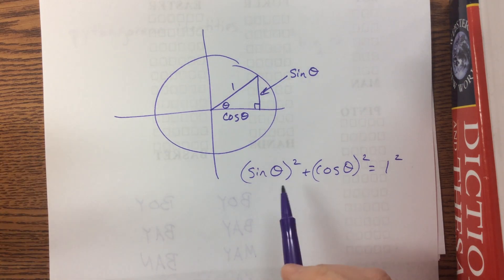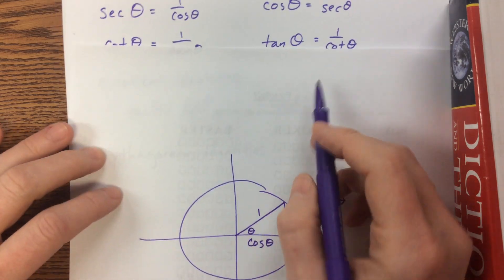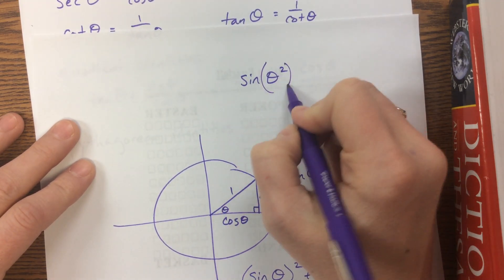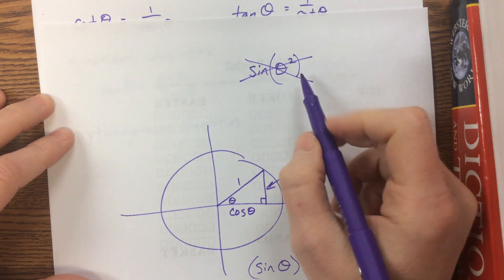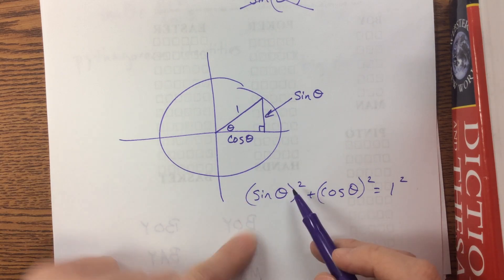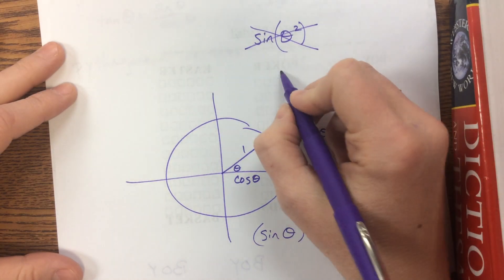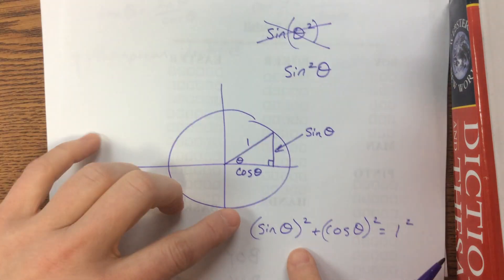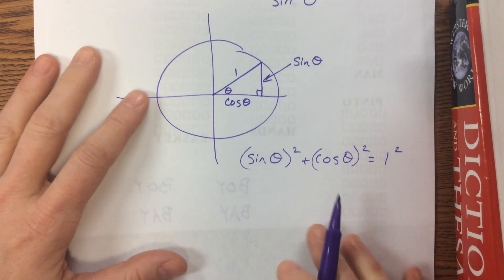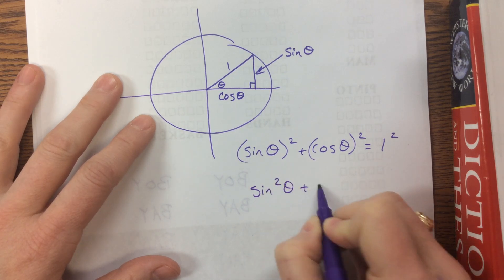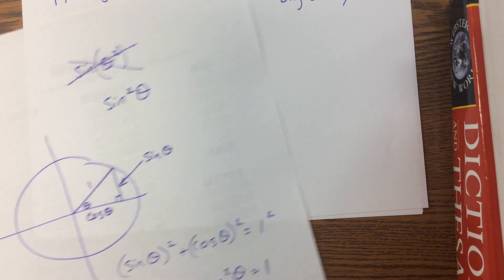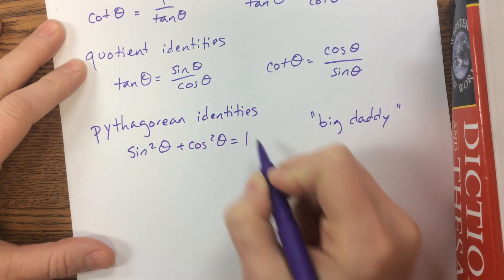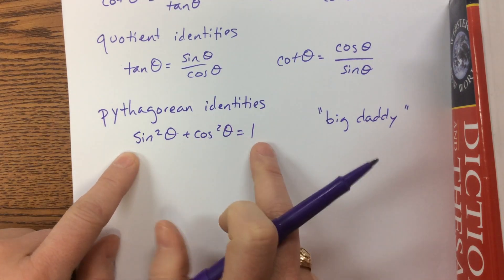Mathematicians are inherently lazy — I mean efficient. Let me point out a difference: 'sine of theta squared' means take the angle, square it, then take the sine — we never do that in PreCal. Instead, we take sine of theta and then square it. Rather than writing out all the parentheses, we write sine squared of theta. So our Pythagorean identity, the big daddy, is: sine squared theta plus cosine squared theta equals one.